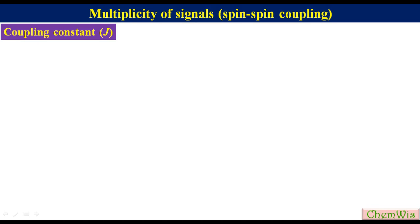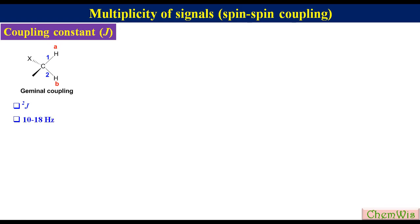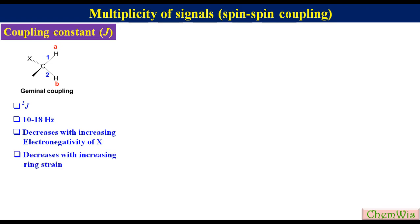Now we will discuss numerical values of different coupling constants. First, geminal coupling constant in saturated systems. It is represented by ²J because it results from the coupling of two protons separated by two bonds. It ranges from 10 to 18 Hertz. The magnitude of geminal coupling constant decreases with increasing electronegativity of the substituent group X, and it also decreases with increasing ring strain.